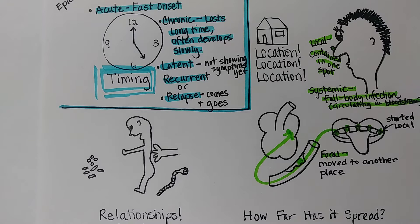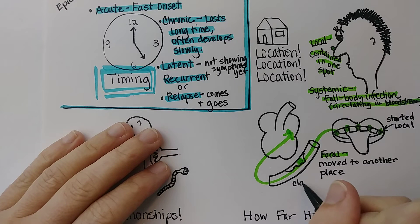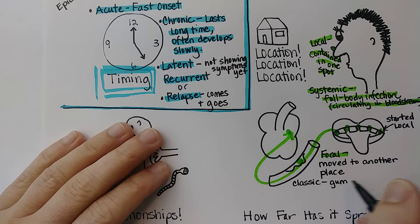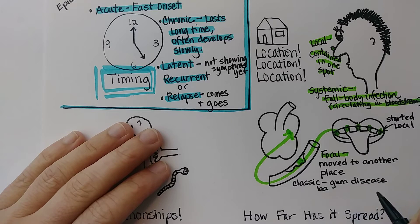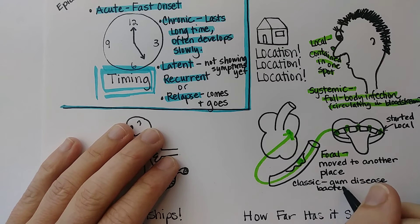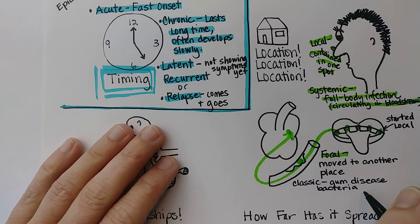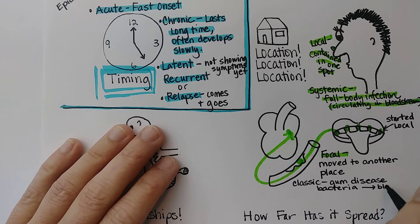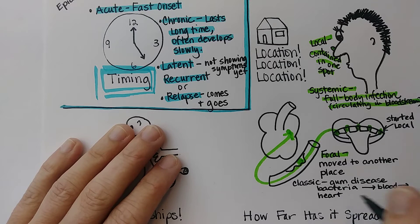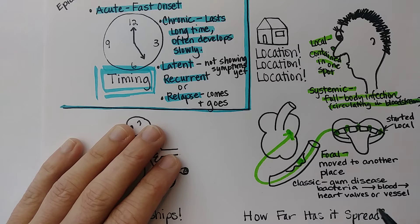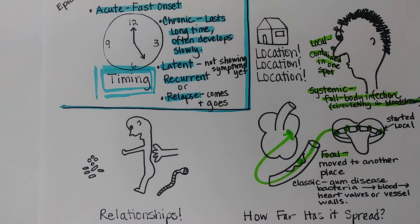The classic example of a focal infection is gum disease bacteria — often streptococcus mitus or other streps in the mouth. Gum disease bacteria get into the blood and then stick to heart valves, where they're called vegetative growths, or to blood vessel walls where they contribute to atherosclerosis.